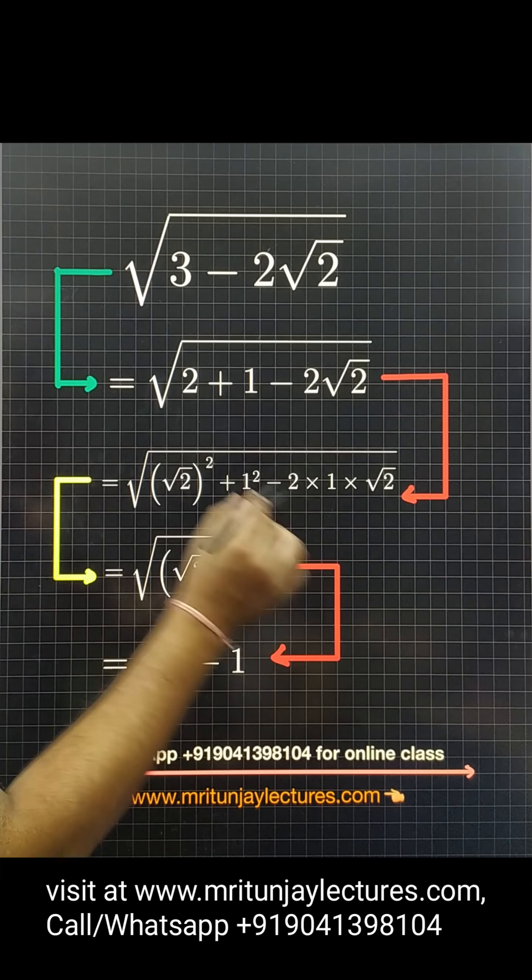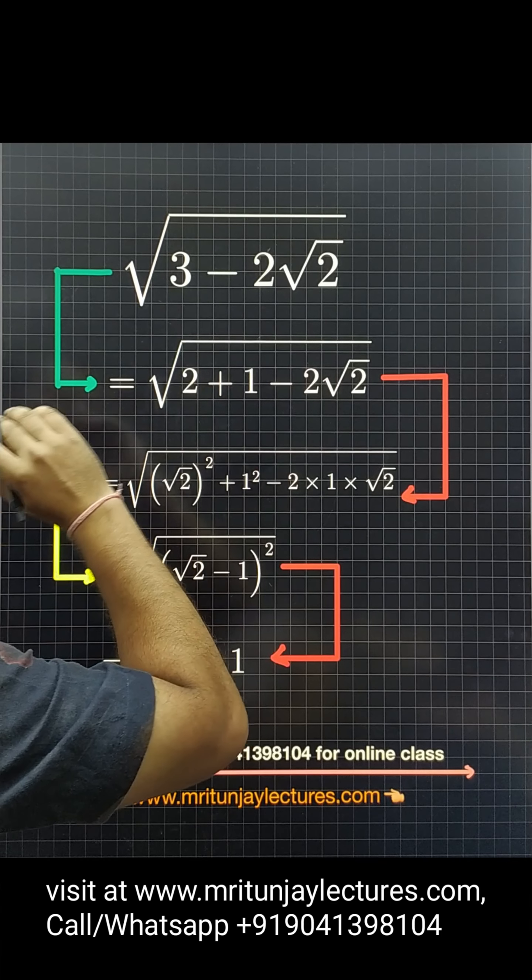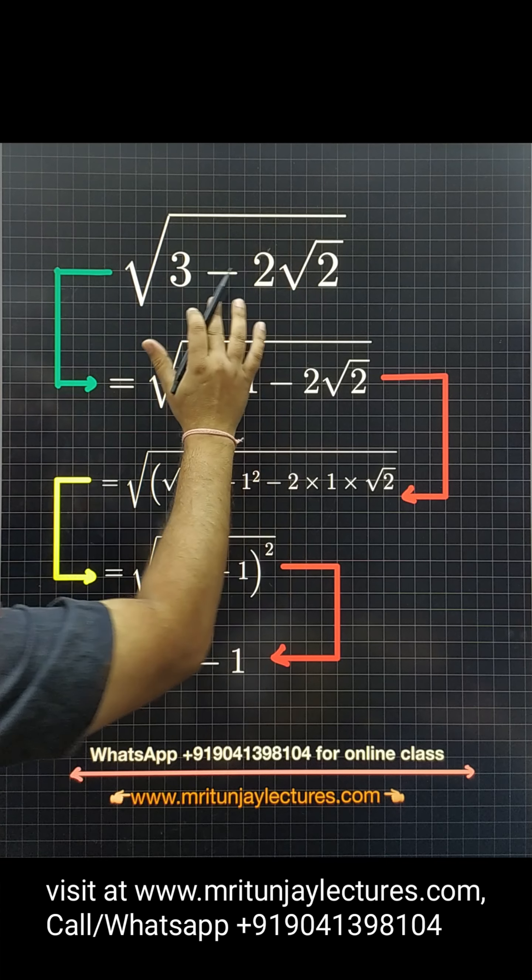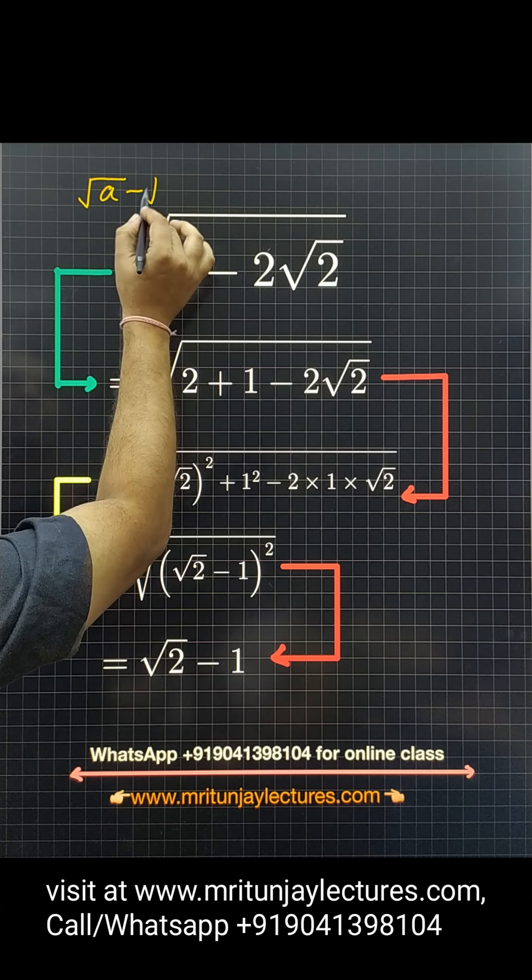Our aim is, now how can we simplify √(3 - 2√2)? I know that this one matches √A - √B type.